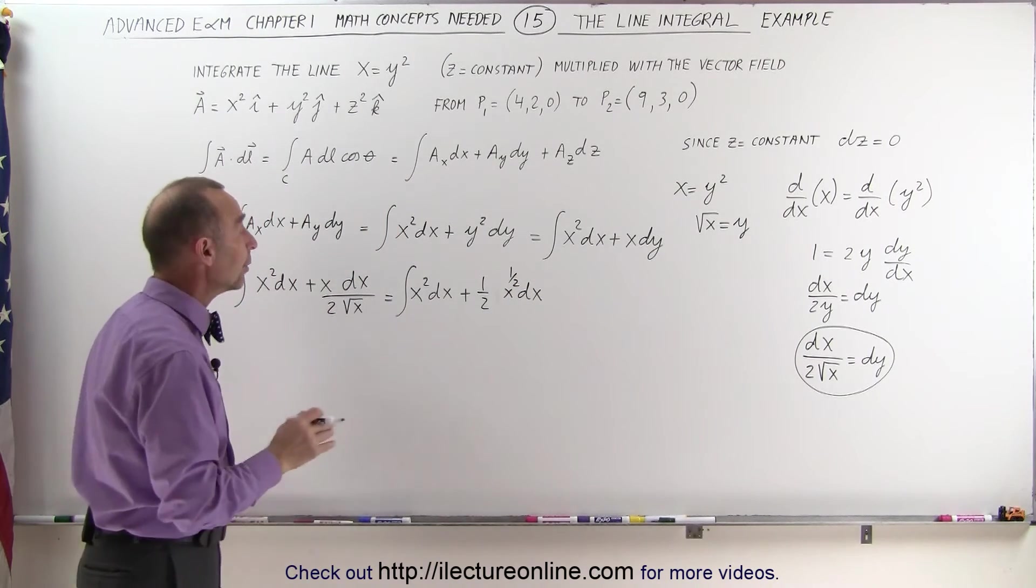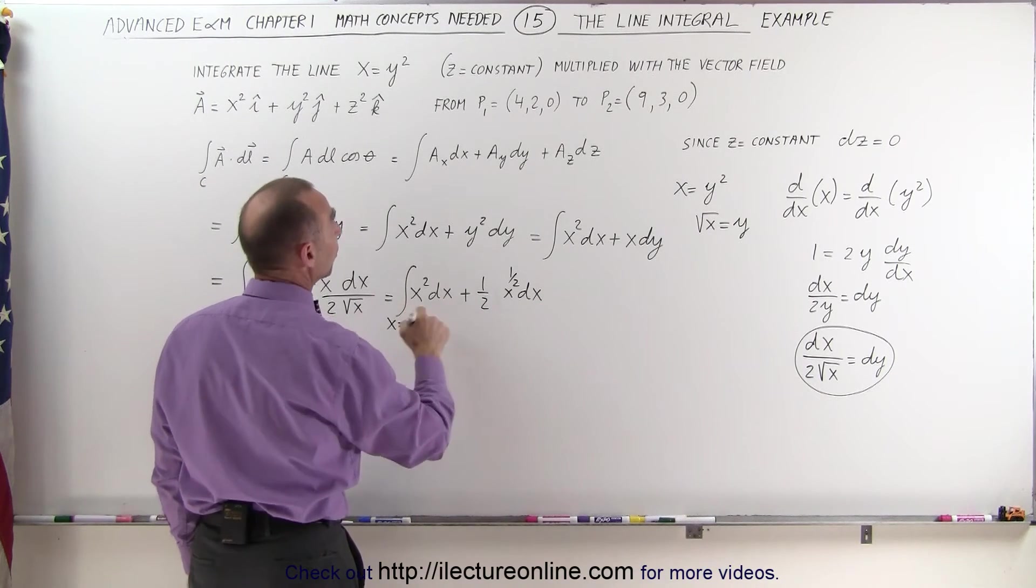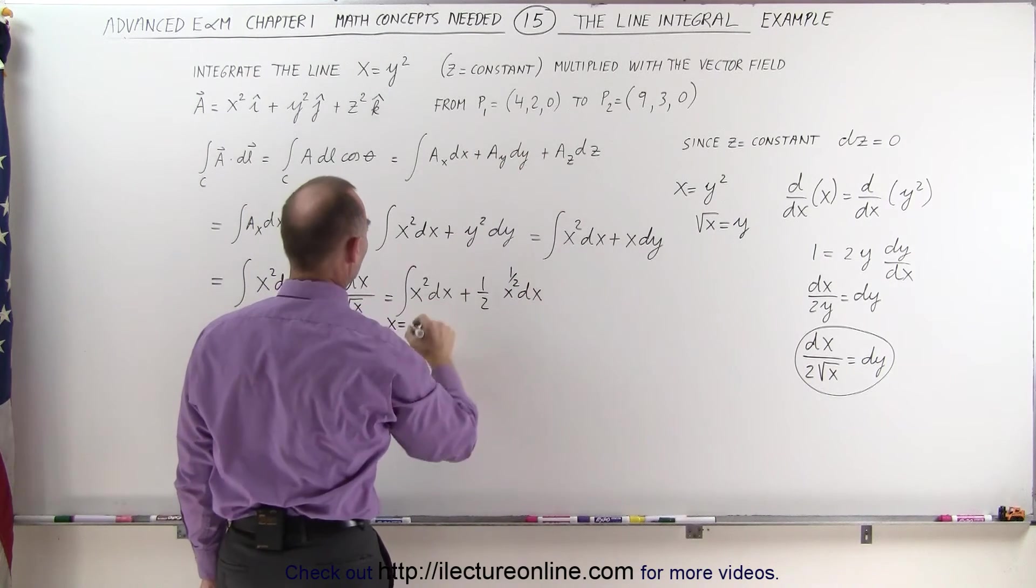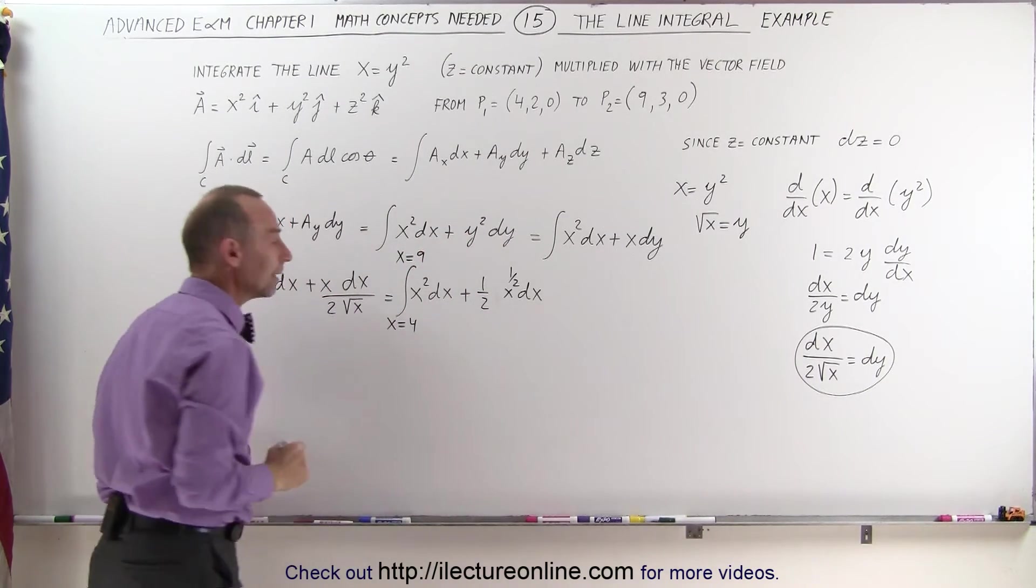Now we can go ahead and integrate it, since the variable is x, we can say from x equals the x value of 0.1, which is 4, to x equals the x value of 0.2, which is 9.